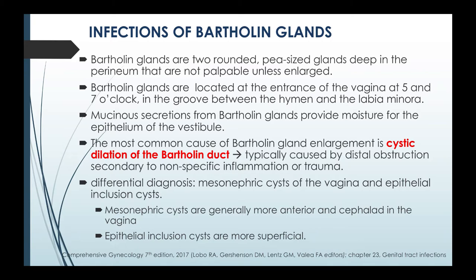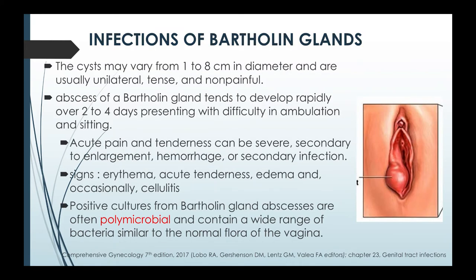Differential diagnosis includes mesonephric cysts of the vagina and epithelial inclusion cysts. Mesonephric cysts are generally more anterior and cephalad in the vagina, whereas epithelial inclusion cysts are more superficial. The cyst may vary anywhere from one to eight centimeters in diameter and are usually unilateral, tense, and non-painful. The cyst may eventually develop into an abscess of the Bartholin gland, which tends to develop rapidly over two to four days.